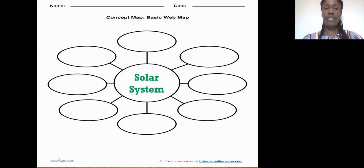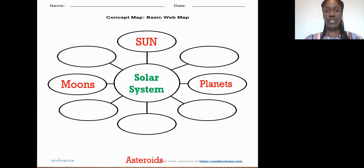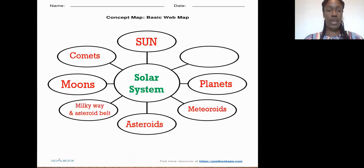Some of the items that should have come to your mind is Sun, moons, planets, asteroids, meteoroids, comets, Milky Way, and asteroid belt and stars. If you got all of those items, give yourself a pat on your back and put your total on the side of the paper.